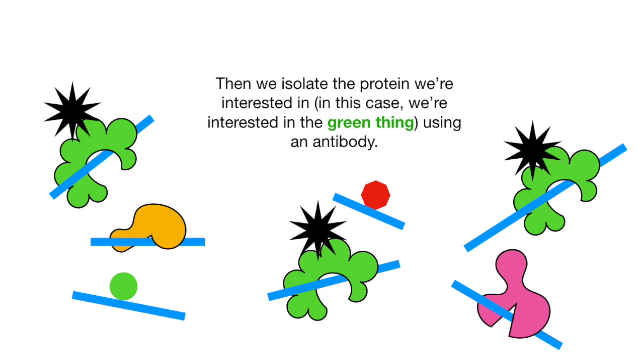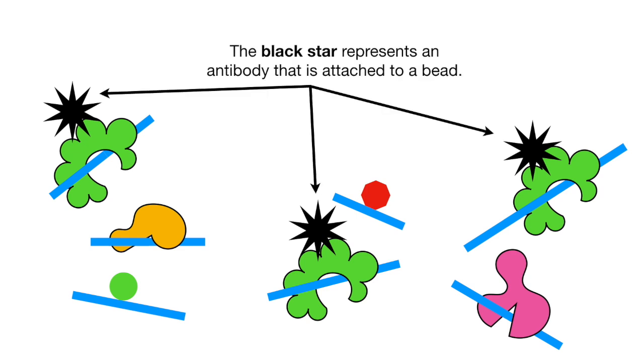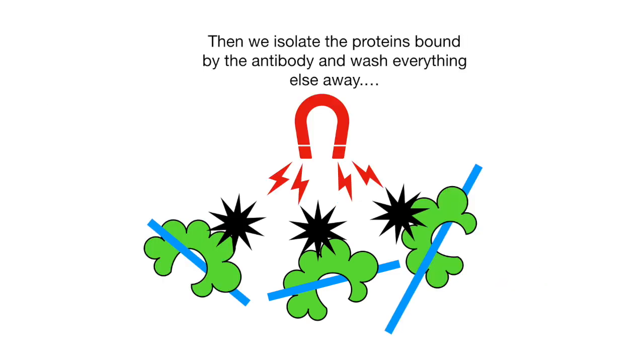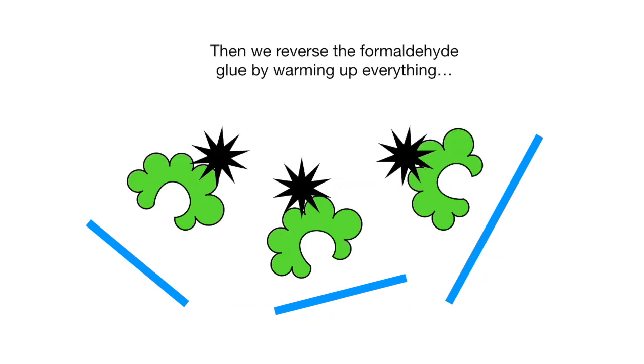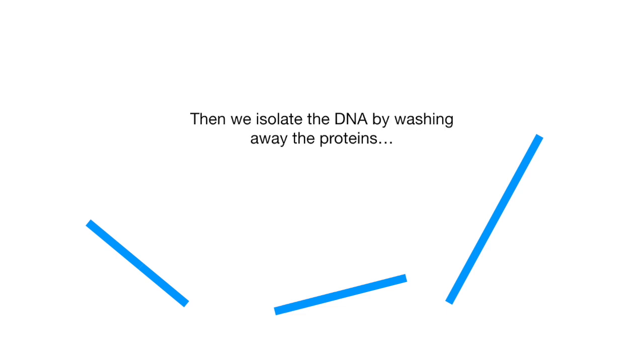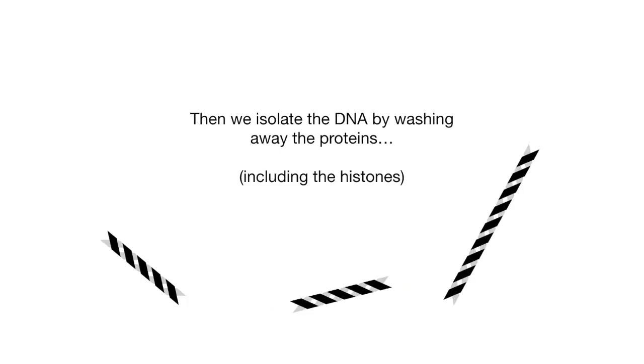Then we isolate the protein we're interested in, in this case the green thing, using an antibody. The black star represents an antibody that is attached to a bead. Then we isolate the proteins bound by the antibody and wash everything else away. Then we reverse the formaldehyde glue by warming up everything. Then we isolate the DNA by washing away the proteins, including the histones.